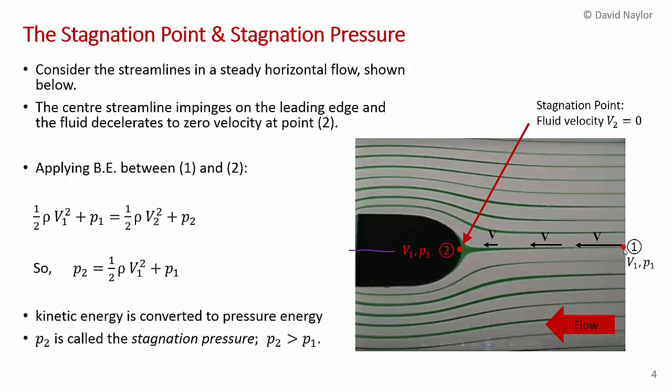Now, if you look at this streamline that's exactly on the center line here of this object, I'm going to define two points. Point 1 is way upstream, and point 2 is right at the nose, where the flow, sort of on one side of it, the flow goes upwards, and on the other side of it, the flow goes downwards. If you were to analyze this, if you could measure the velocity along this streamline,